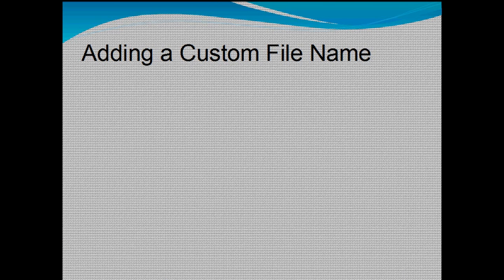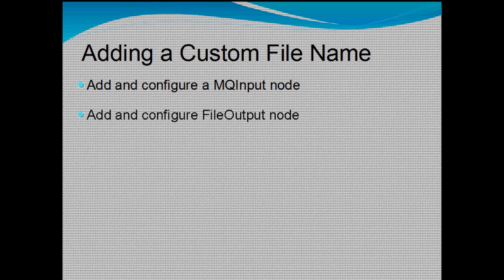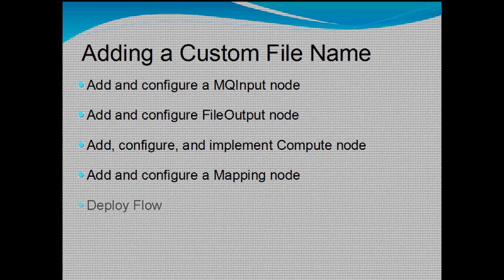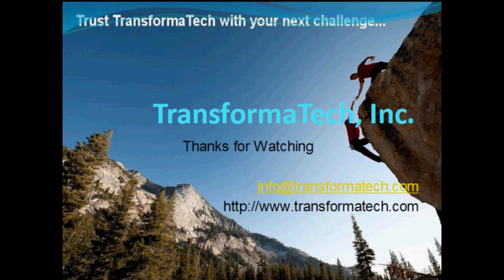In conclusion, we're going to go over the steps again to add a custom file name using local environment. You have to add and configure an MQ input node so we can put messages into our queue and have them go through our flow. We're going to add and configure a file output node so we can output the message to a file with our custom file name. We're going to add, configure, and implement a compute node that will set the local environment file name to something we want using ESQL. Then we add and configure a mapping node to pass the local environment through a mapping. We deploy the flow and run a flow test to test the output and make sure we're getting what we want. Thank you for watching this video tutorial on how to set up your own custom file names using the local environment from Transformatech Inc.